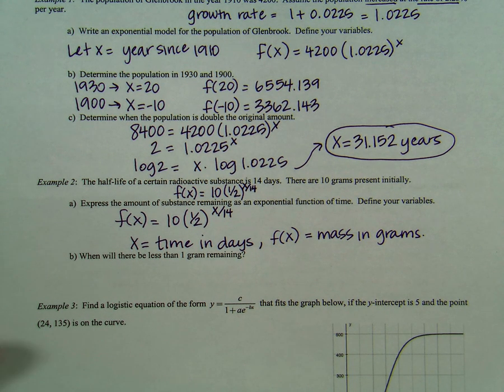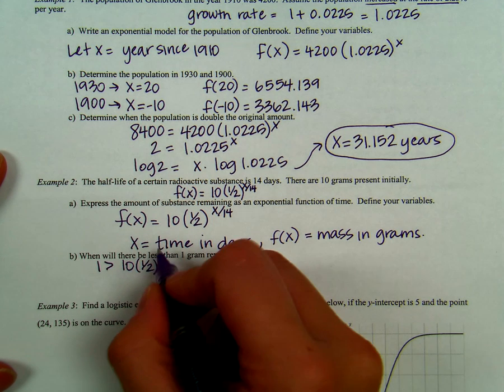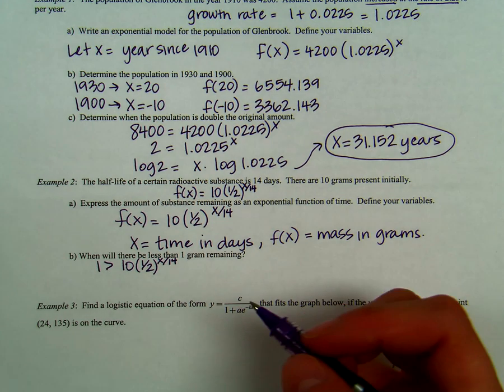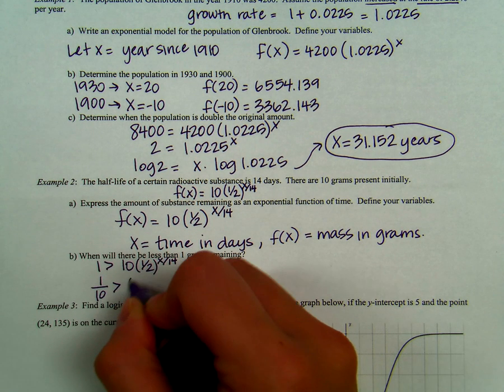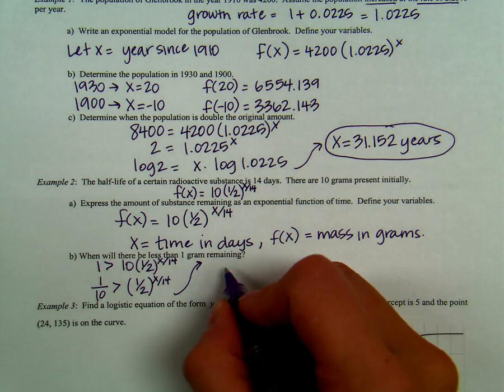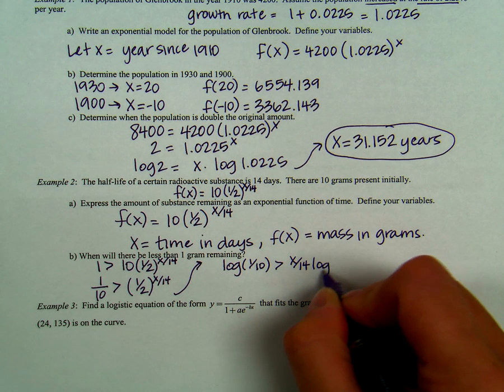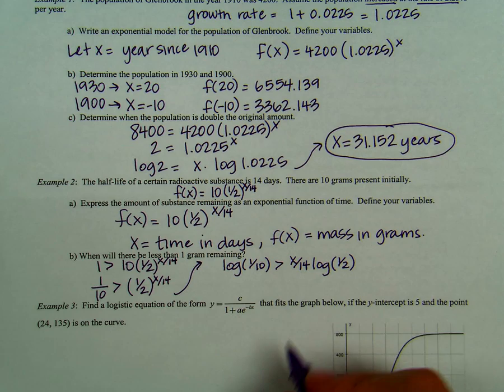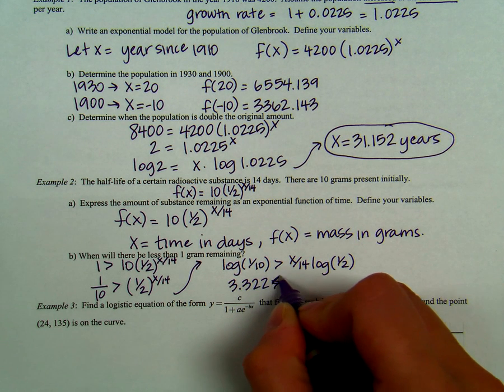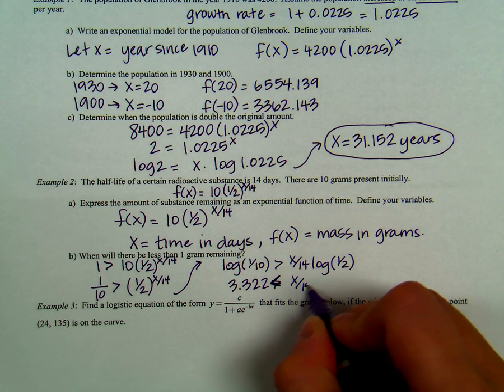Now in B, it says, when will there be less than 1 gram remaining? So to set this up, we need to know when 1 is going to be greater than 10 times 1 half to the x over 14 power. So to solve this, we're just simply going to divide by 10 first. So we get 1 over 10 is greater than 1 half to the x over 14 power. Then we're going to take the log of both sides. So we have the log of 1 over 10 is greater than x over 14 times the log of 1 half. Remember your rule of logs here. So when we simplify this out, we are going to see that 3.322 is less than x over 14. Because the log of 1 half gives you a negative value, we have to switch the sign.